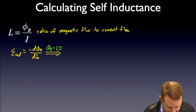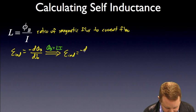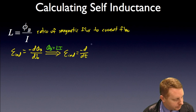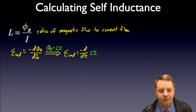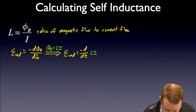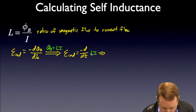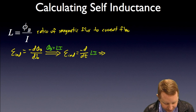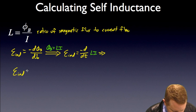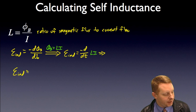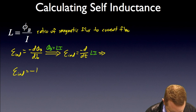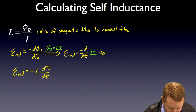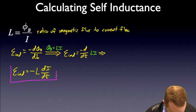So I could rewrite this as the induced EMF is equal to minus the time derivative of our self-inductance times our current flow. Since the self-inductance is a constant, I could pull that out of the derivative sign and say that the induced electromotive force is equal to minus L di dt. That's an important formula and probably a really good one to remember.